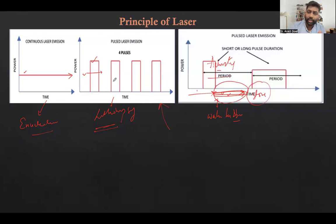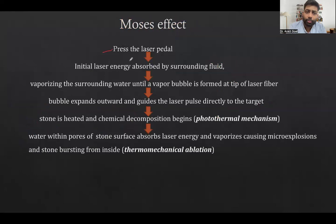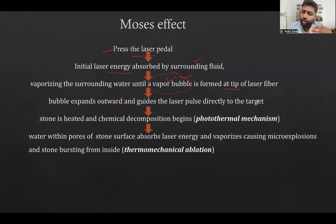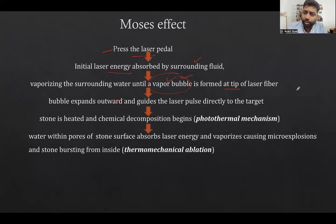To summarize: when you press the paddle, the initial energy is absorbed by the surrounding fluid and forms a vapor bubble around the tip of the laser. This bubble expands and moves toward the target, but with some dissipation of energy. The energy that is ultimately transmitted to the stone is what causes the lithotripsy.